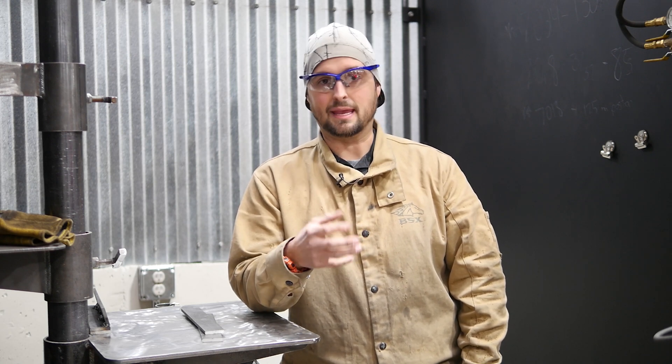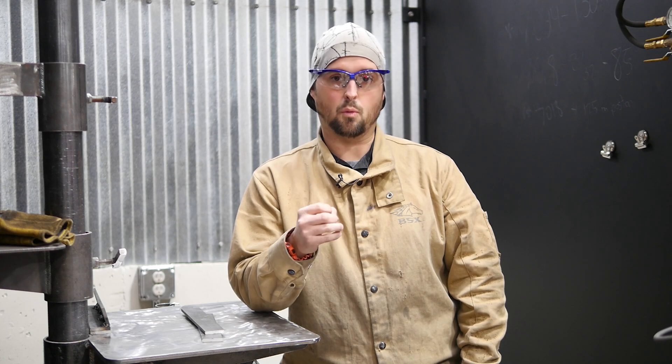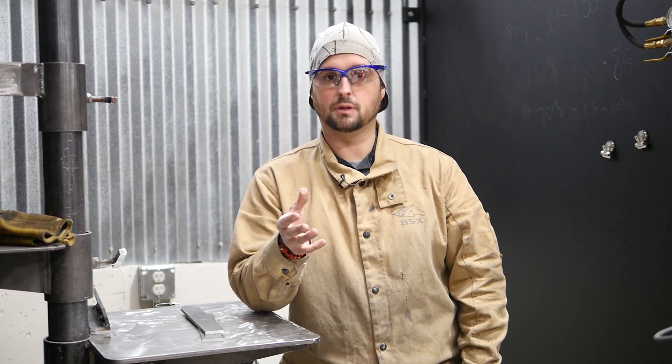The first mode of transfer we're going to look at today is short-circuit transfer. They call it short-circuit transfer because the wire comes out of the gun, hits the molten weld puddle, and for a second actually welds itself in there. Then heat and the amperage starts rising up and the wire basically pops or explodes. This is what transfers the wire metal from the wire to the weld puddle. It's a great mode of transfer for thin materials but it does have its limitations. So let's set up our machine for short-circuit and we'll run a few beads and talk about it.